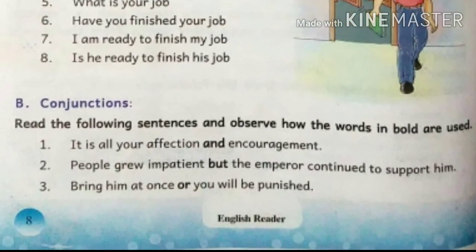Next: B — Conjunctions. Conjunctions are words that join two words, two sentences, or two phrases together. Read the following sentences and observe how the words in bold are used. Number one: 'It is all your affection and encouragement.' Here 'and' joins the words 'affection' and 'encouragement' — 'and' is a conjunction.